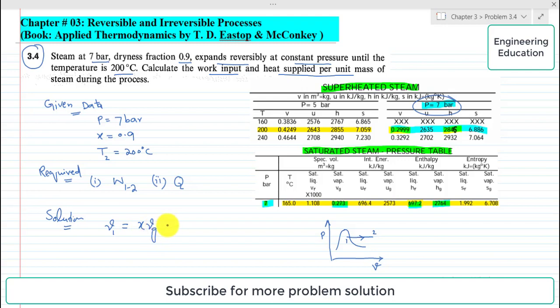So if we put the values, dryness fraction is 0.9, while the value of vg from this table is 0.273 cubic meters per kilogram. So the value of v1 comes out to 0.2455 cubic meters per kilogram.